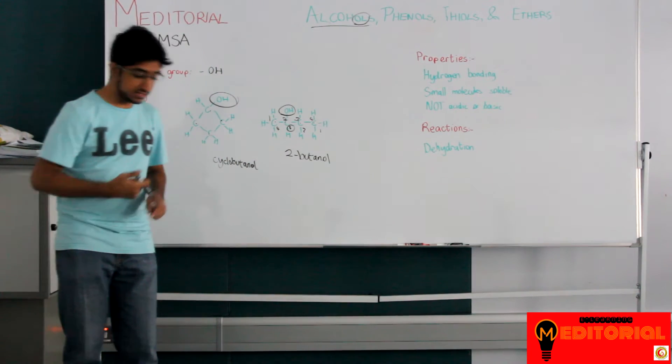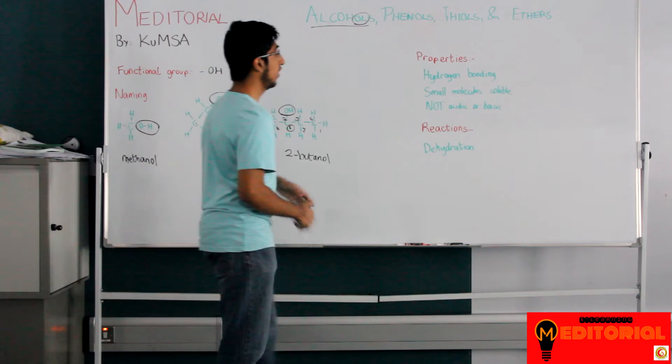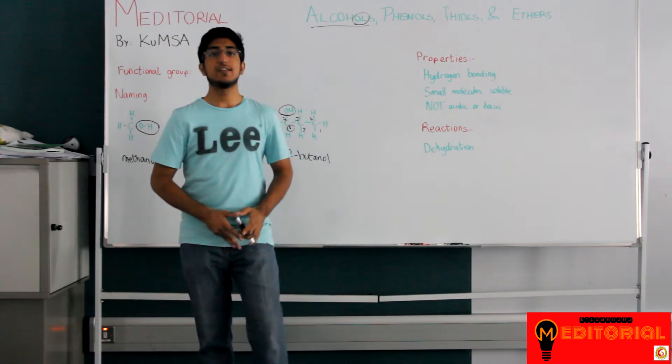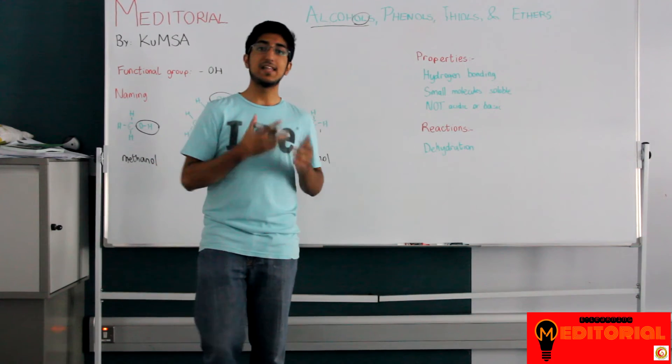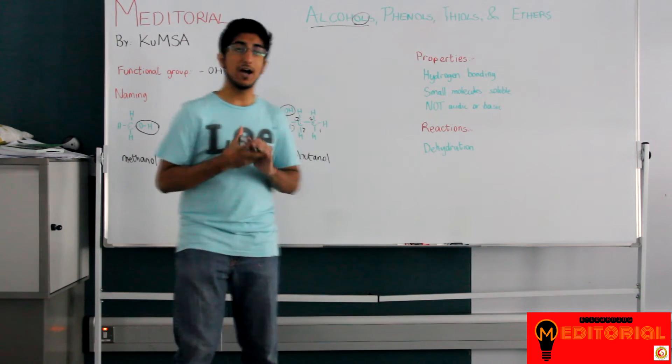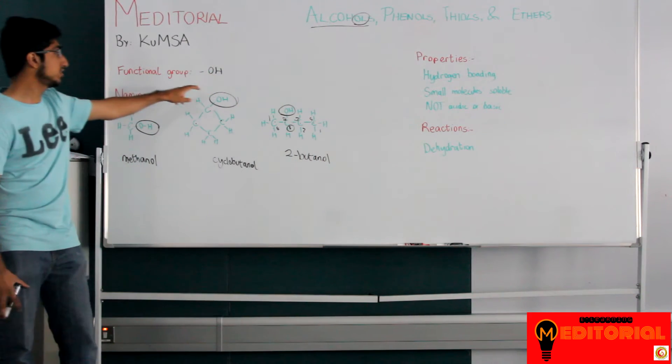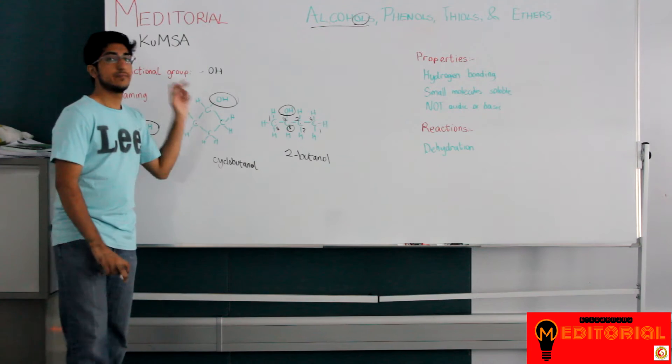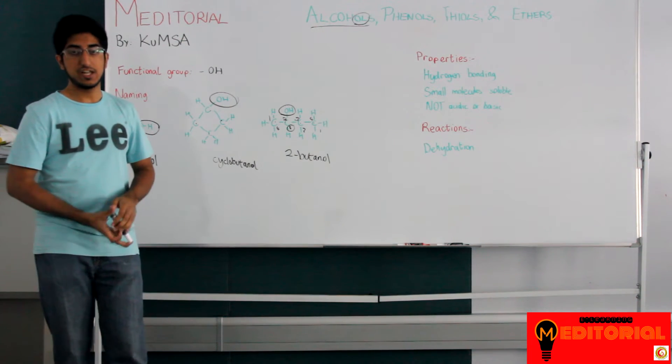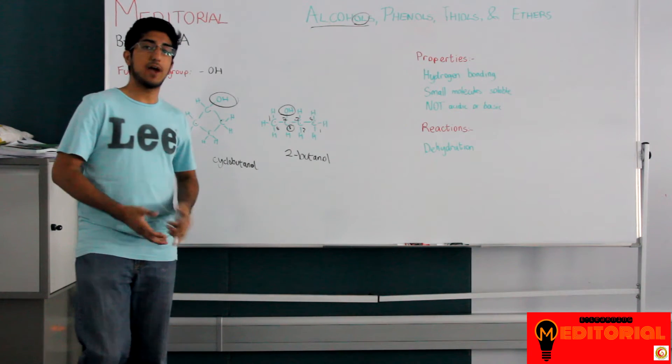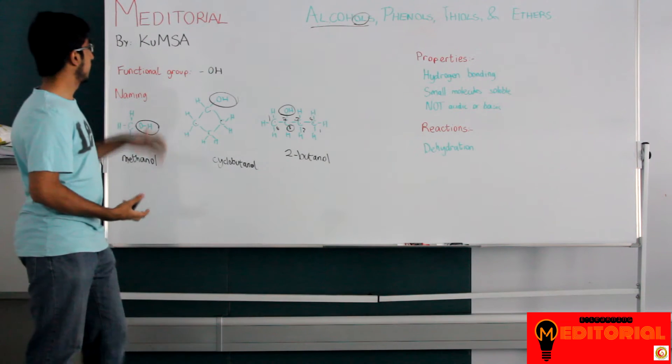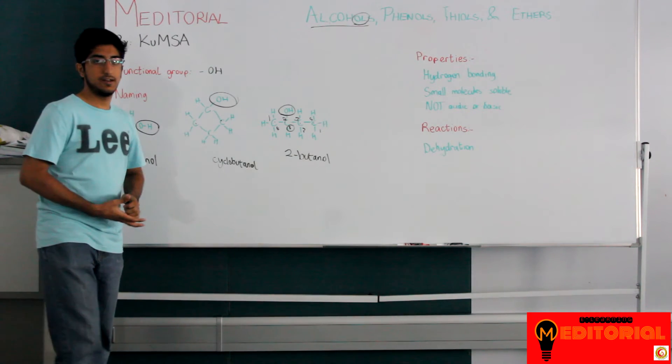That's all there is to naming. It's pretty easy. Alright. On to their properties. Alcohols can accept hydrogen bonds and they can form hydrogen bonds. Why? Because they have a hydrogen attached to an oxygen.